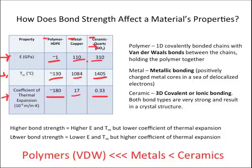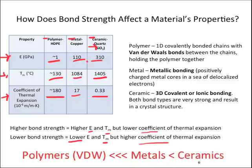To summarize, higher bond strength leads to higher elastic modulus and melting temperature, but a lower coefficient of thermal expansion. Van der Waals bonding in polymers is much less than metallic bonding in metals, which is much less than 3-D covalent or ionic bonding in ceramics.